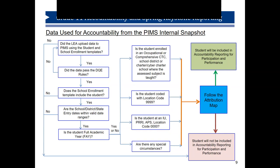The next questions relate to the attribution map. Is the student enrolled in an occupational or comprehensive CTC, school district, charter, or cyber charter school where the assessed subject is taught? Is the student coded with location code 9999? Is the student at an IU, PRRI, APS, or location code 0000? Are there any special circumstances? Based on the attribution map, students are either included or excluded from accountability reporting.